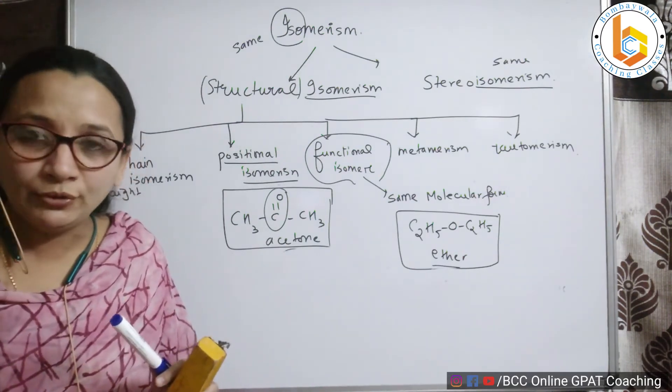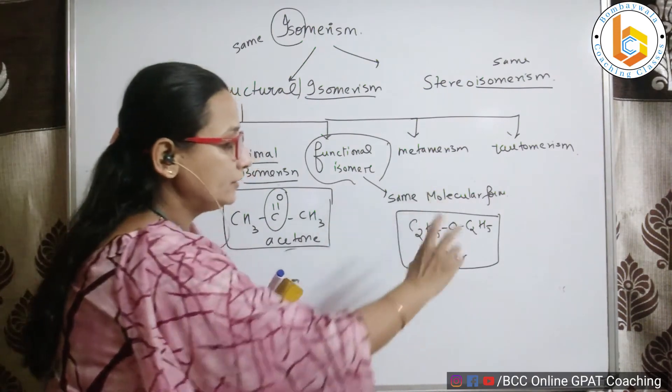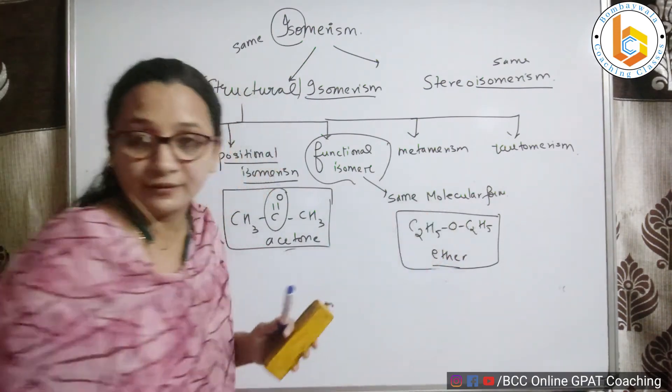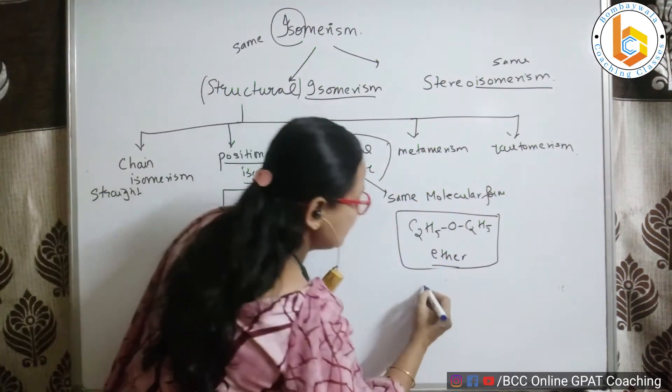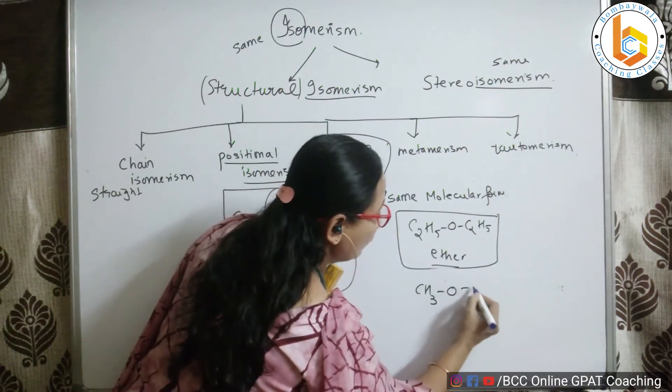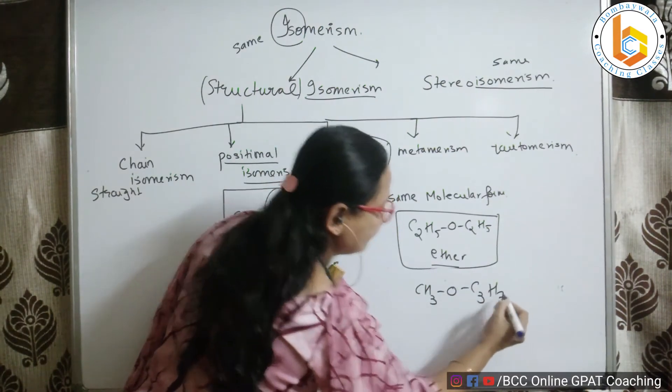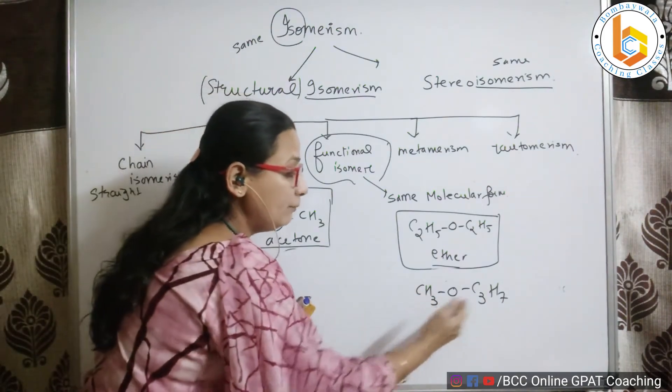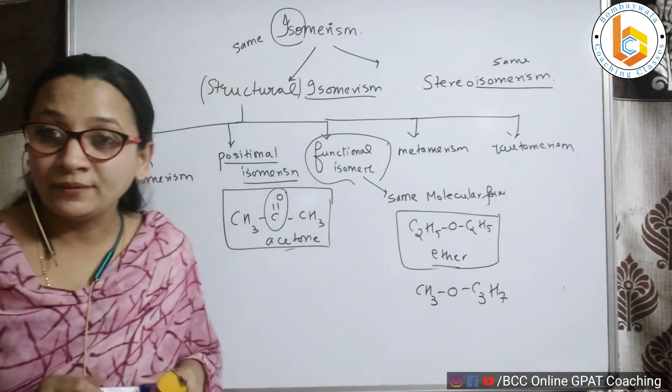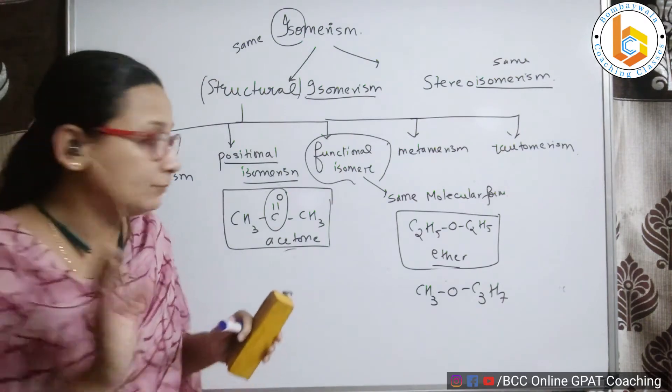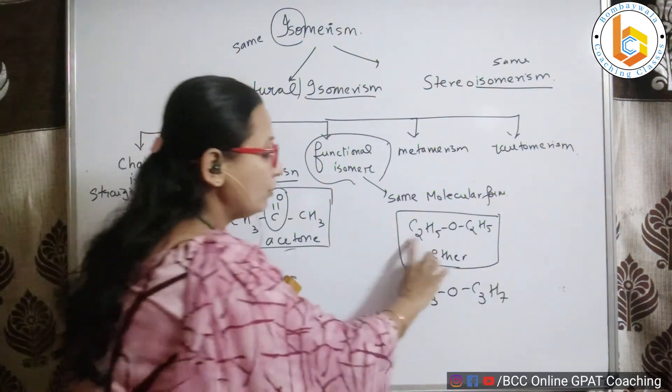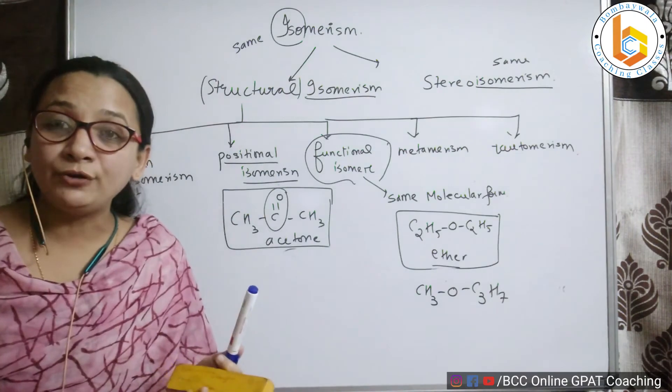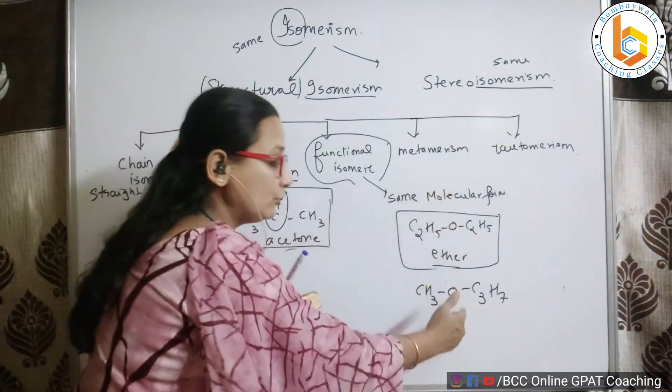If I can write like this: CH3-O-C3H7, which is nothing but methylpropyl ether. If the same total number of carbons are the same, 4 here, 4 here, but the chains are different on both sides of the functional group.